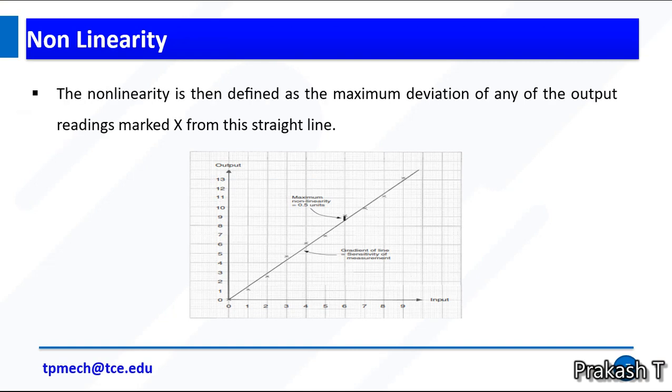Non-linearity is defined as the maximum deviation of any output reading from its straight line. This is our straight line. The dotted line is the reading value. Non-linearity is the difference, the maximum deviation from the straight line.